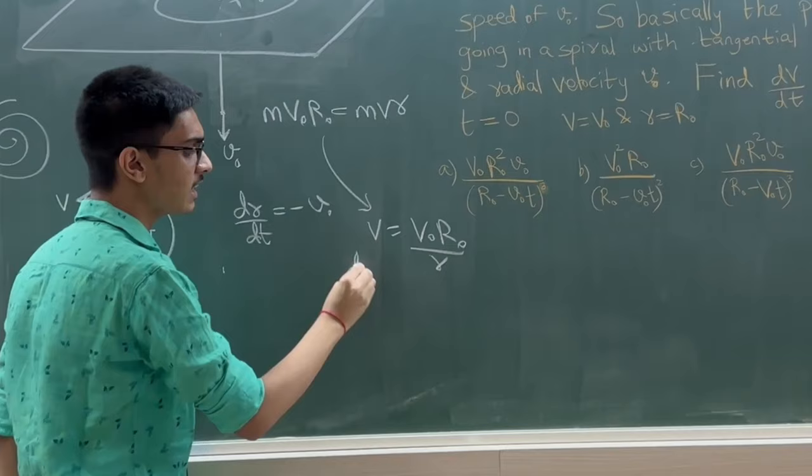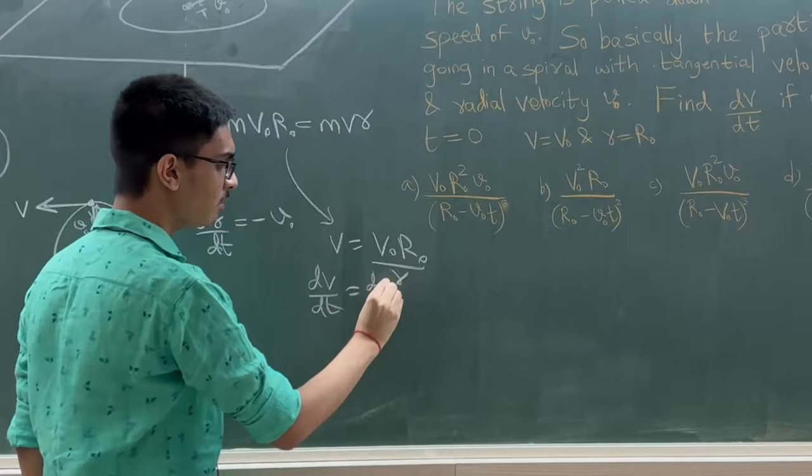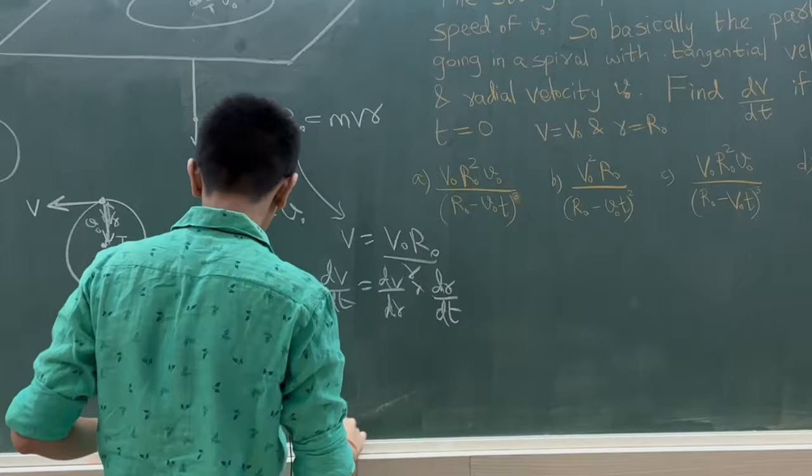Let's differentiate this. dv/dt. So we will write dv/dt equals dv/dr into dr/dt.